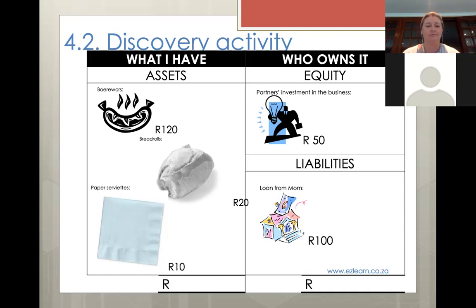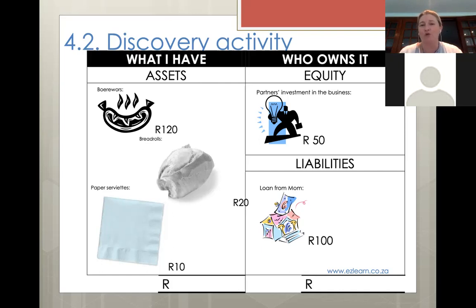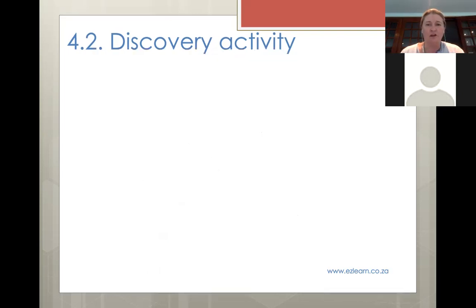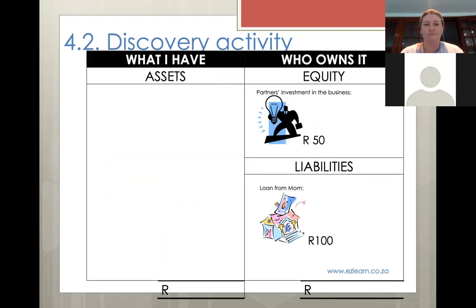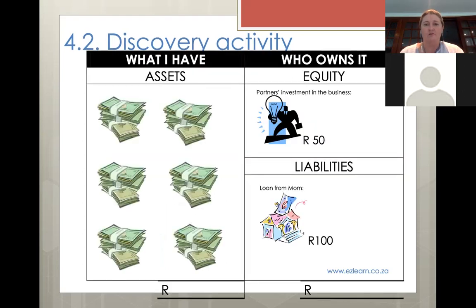Now we're going to make the boerewors rolls - this is where it gets fun. If you had the actual physical icons, you'd fold the roll around the boerewors, then fold the napkin around the roll and staple it together to make your ready-made boerewors roll. But obviously you don't actually have to do that - we're just going to say this is what it's going to look like.